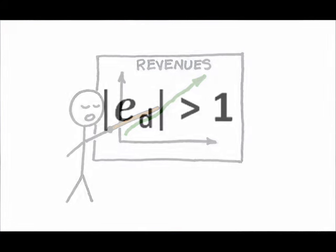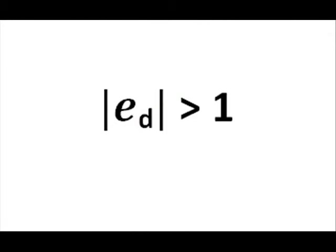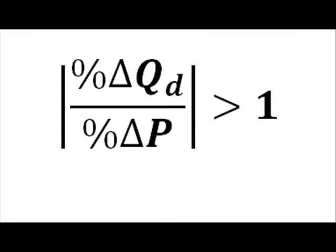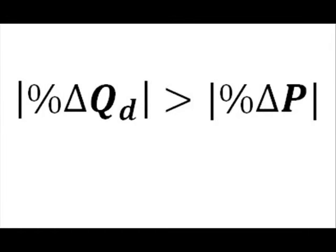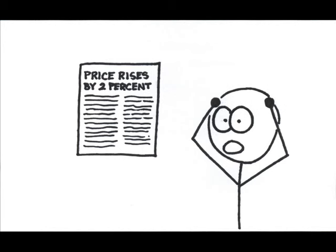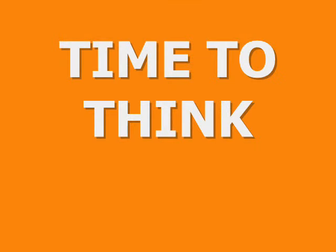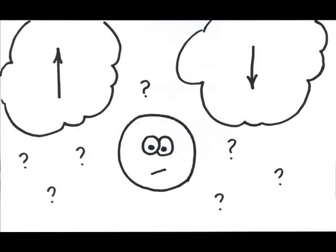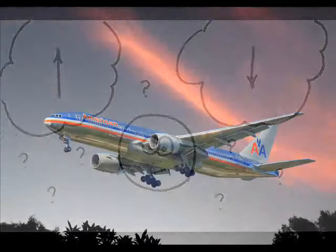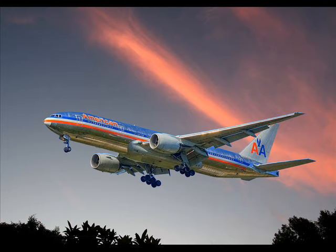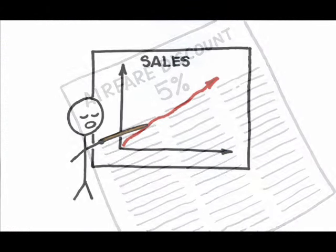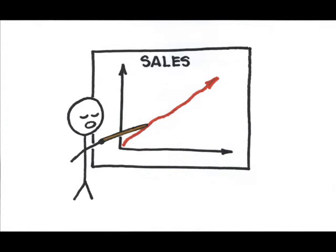What if the absolute value of the elasticity had been greater than 1? That would mean the absolute value of the percent change in quantity demanded over the percent change in price is greater than 1, which could only be true if the size of the quantity change is greater than the size of the price change. Having an elasticity value greater than 1 indicates a relatively large quantity demanded reaction to a relatively small price change — demand is elastic. Demand for airline tickets is fairly elastic, meaning customers react a lot to fairly small price changes. So by decreasing prices a little bit, airlines will see a relatively large increase in ticket sales, yielding greater total revenue.